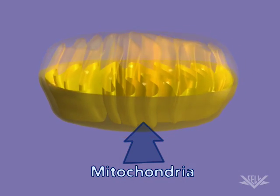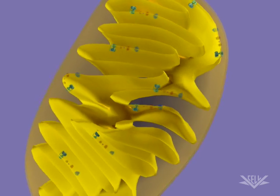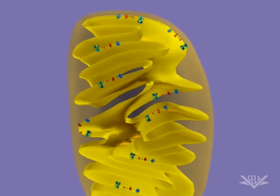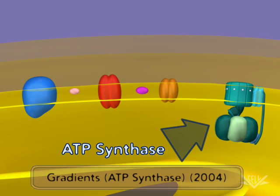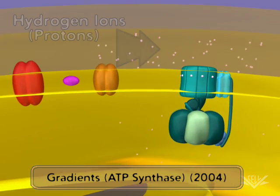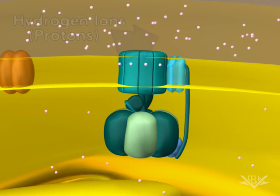This organelle produces ATP, an energy molecule that is used by many other cellular processes. ATP is produced by a complex in the mitochondrial membrane called ATP synthase. The energy to produce ATP is provided by a gradient of protons, or hydrogen ions, found on two sides of the membrane.